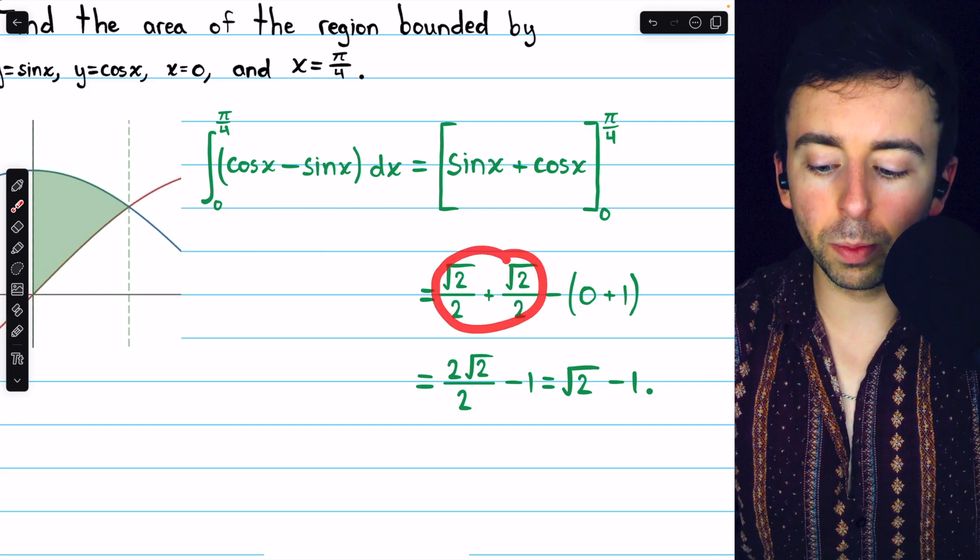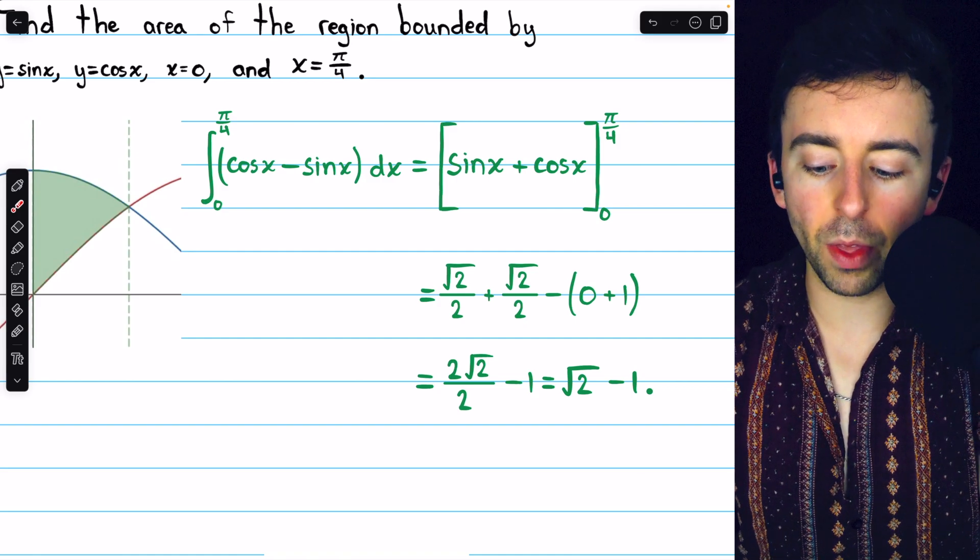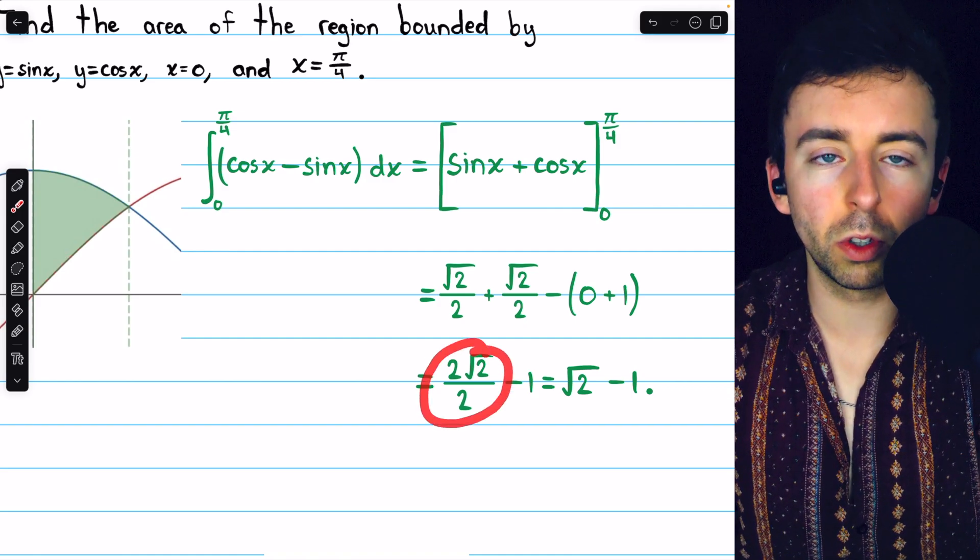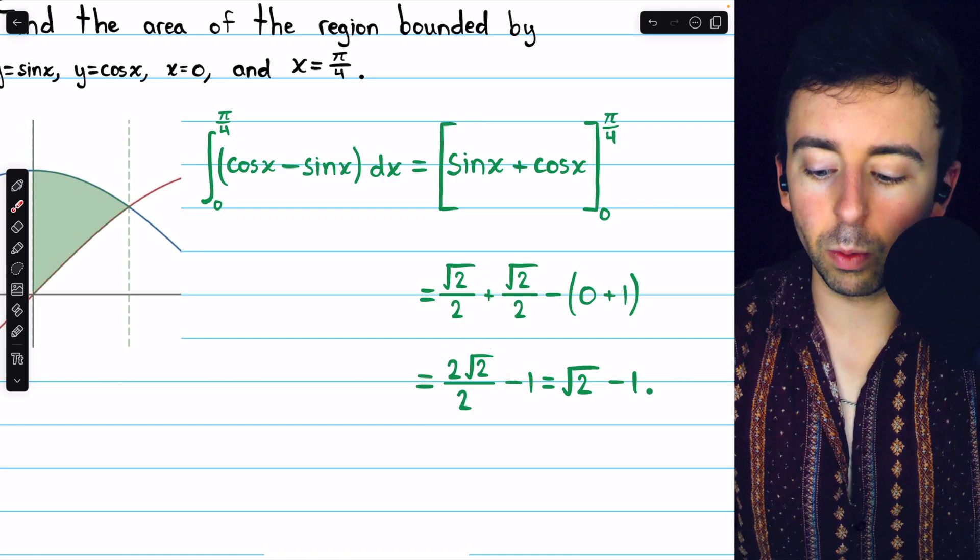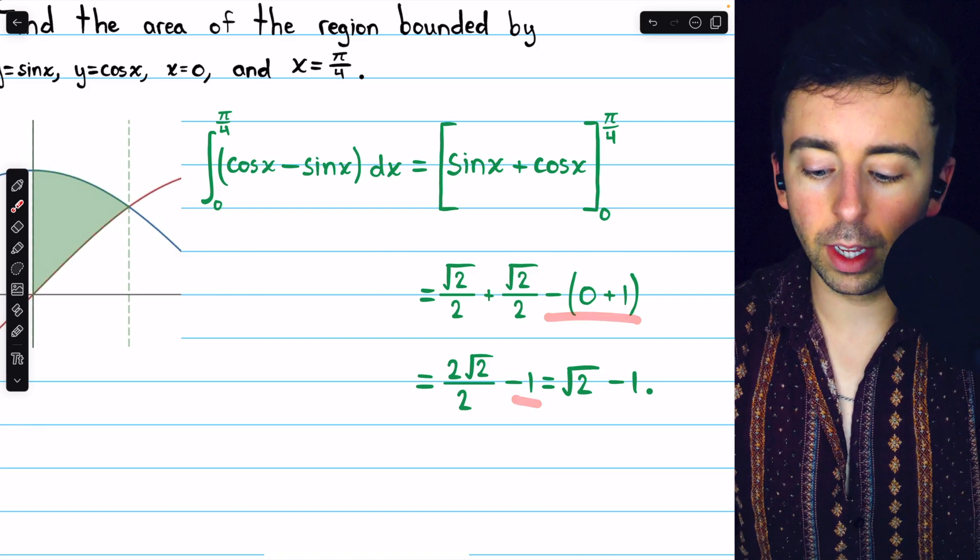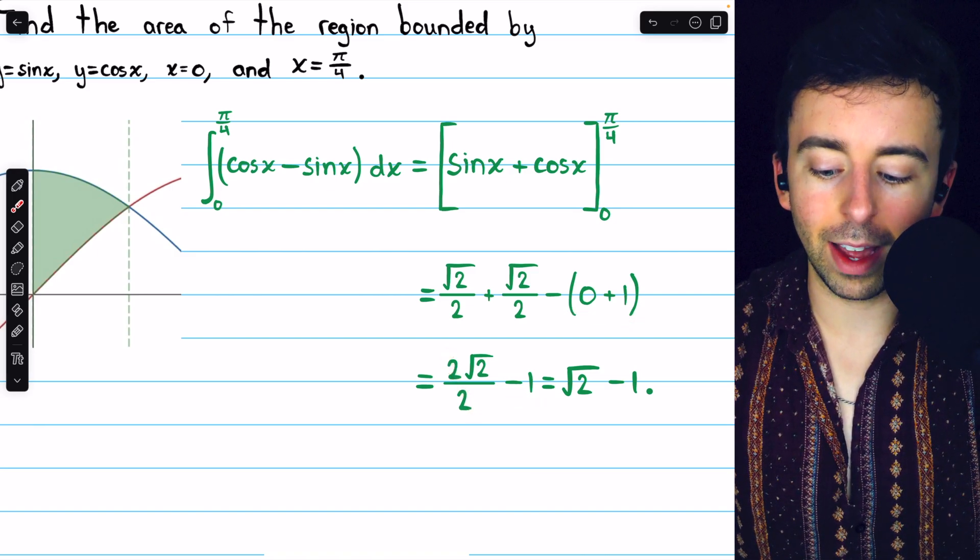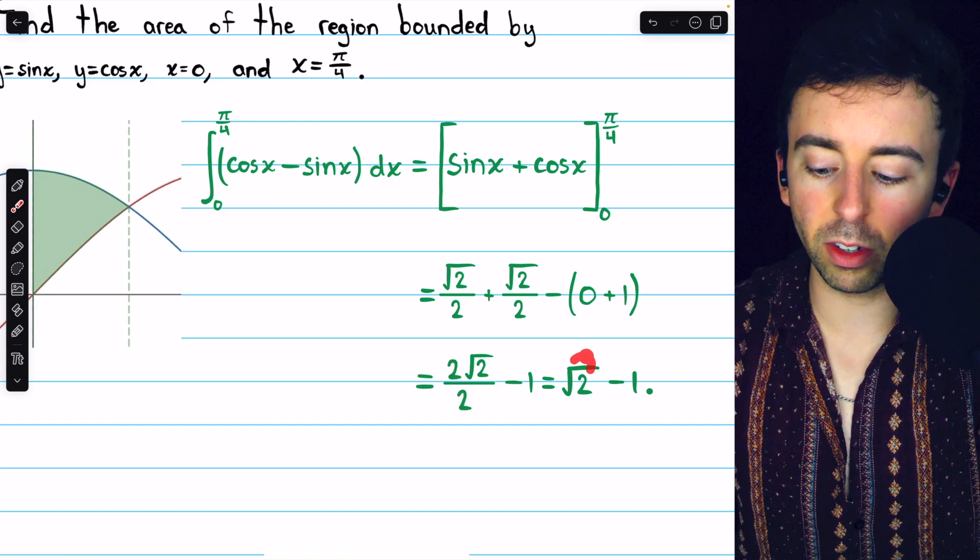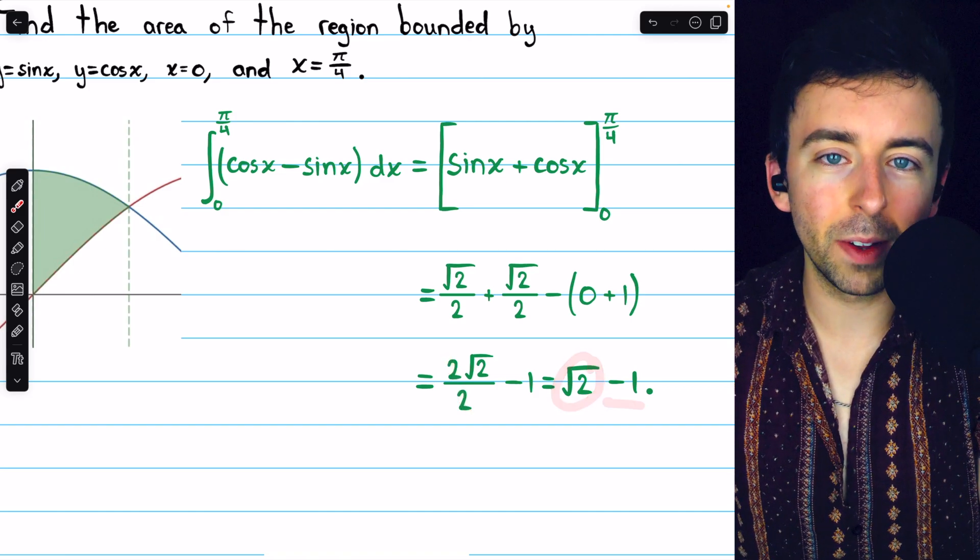Now root two over two plus root two over two, we can combine those into two root two over two. And then we just have minus one. Now the twos cancel out with that two root two over two term. So once those cancel out, we just have root two minus one.